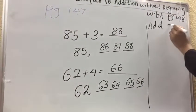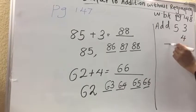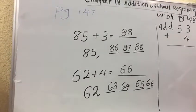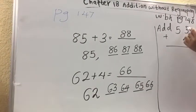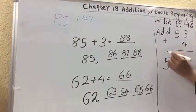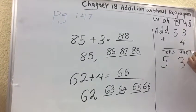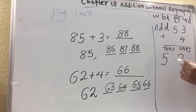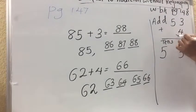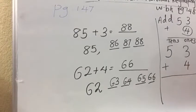Add 53 plus 4. We will write 53 in tens and ones. 53 plus 4, the 4 will go in the ones place. Now we will add.